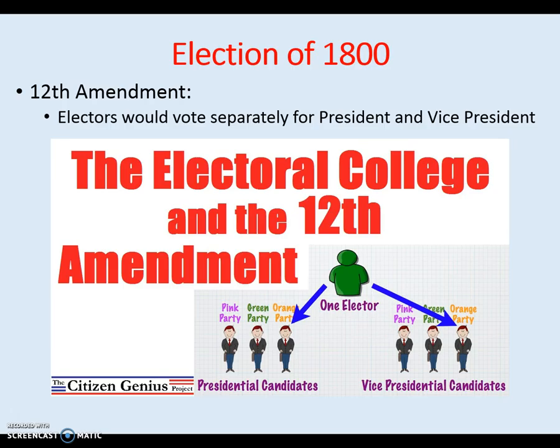As a result of the election of 1800 tie, the 12th Amendment to the Constitution was passed. Under the 12th Amendment, the Electoral College electors vote separately for president and vice president. One group of candidates runs for president, the other for vice president, and whoever gets the most votes in each separate election wins. What usually ends up happening is a presidential candidate teams up with a vice presidential candidate and they run together.